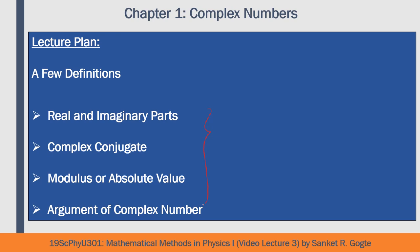The first definition is real and imaginary parts of complex numbers. Then we will discuss the complex conjugate of a complex number. Finally, modulus, absolute value, and argument of a complex number. In this lecture we will only define modulus and argument with mathematical formulas; the geometrical interpretation of both will be discussed later in coming videos.